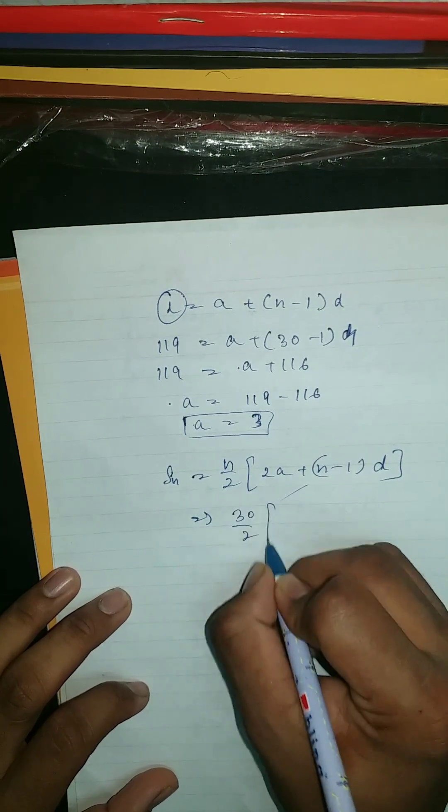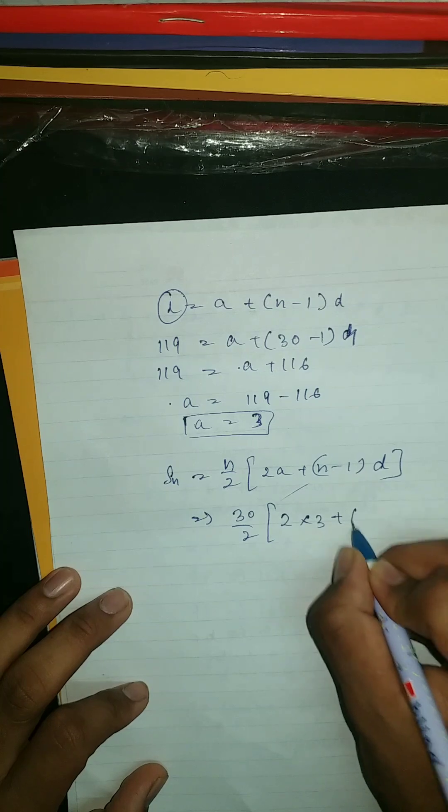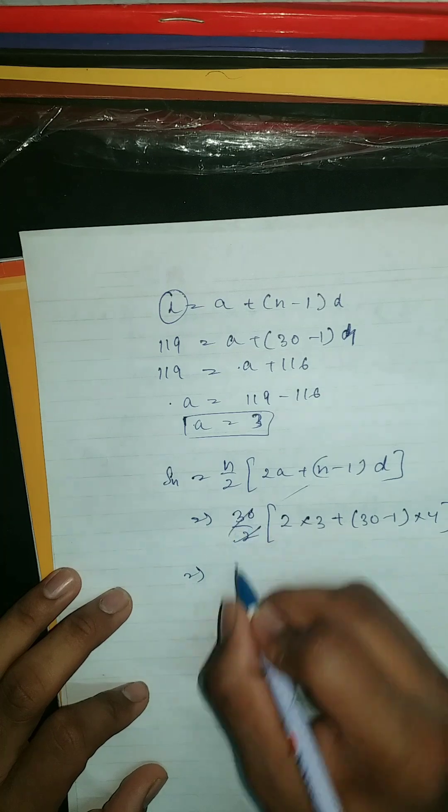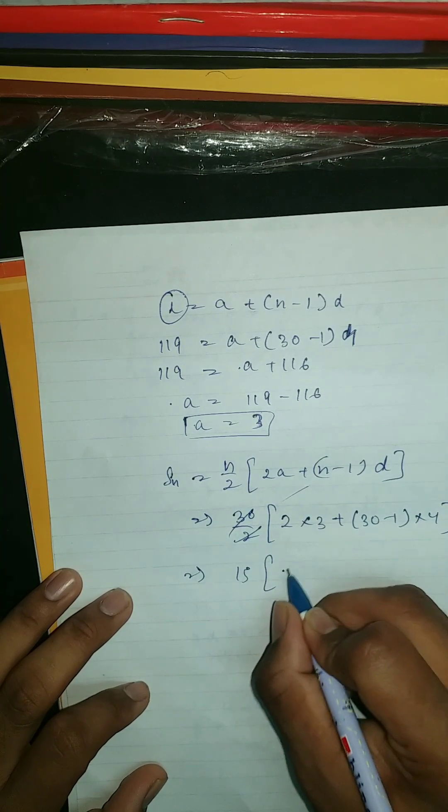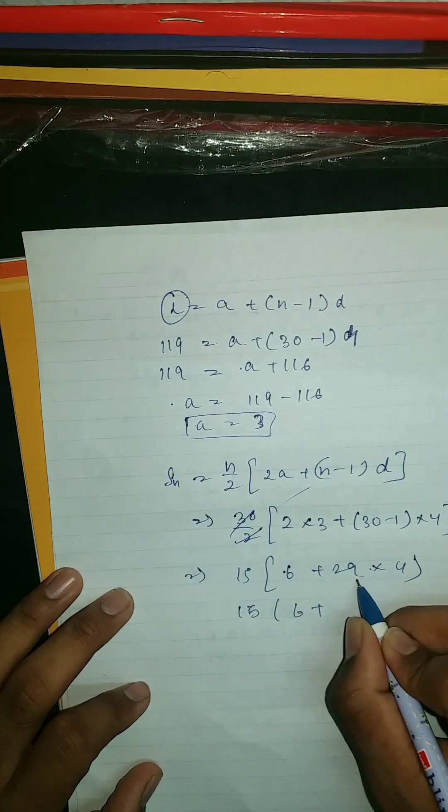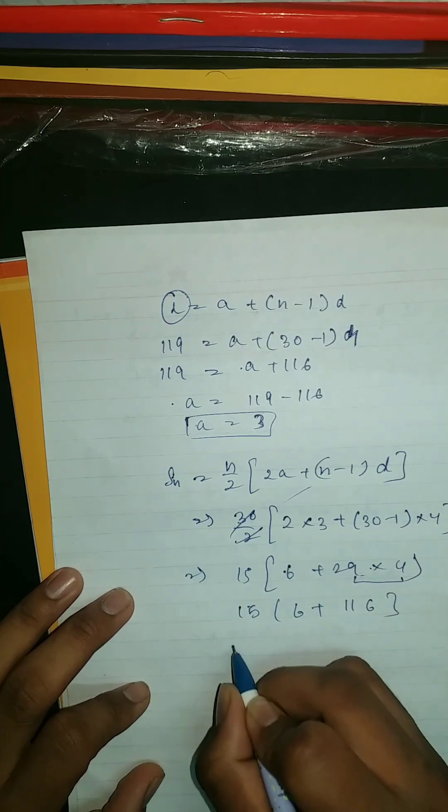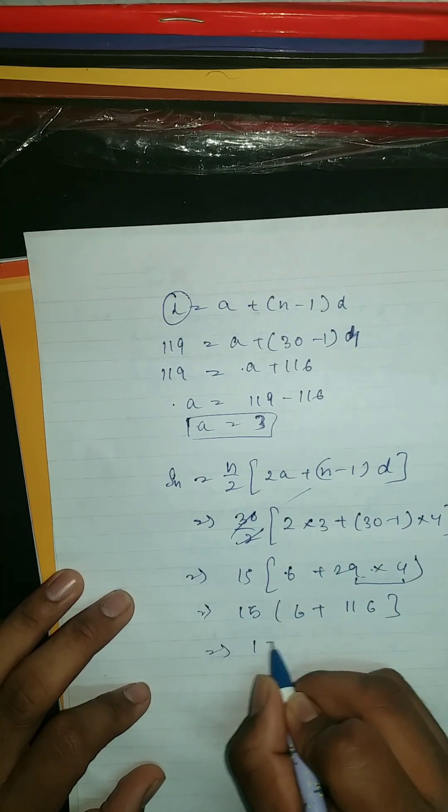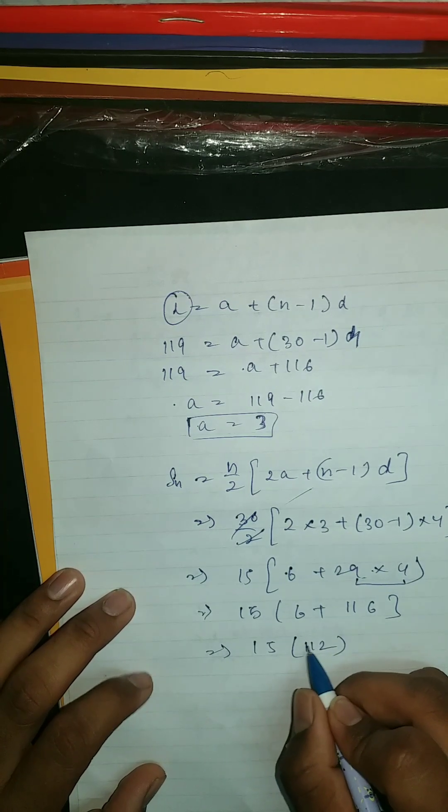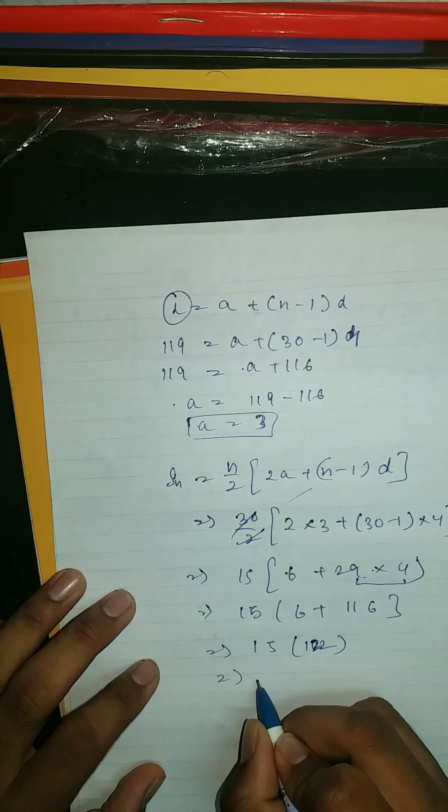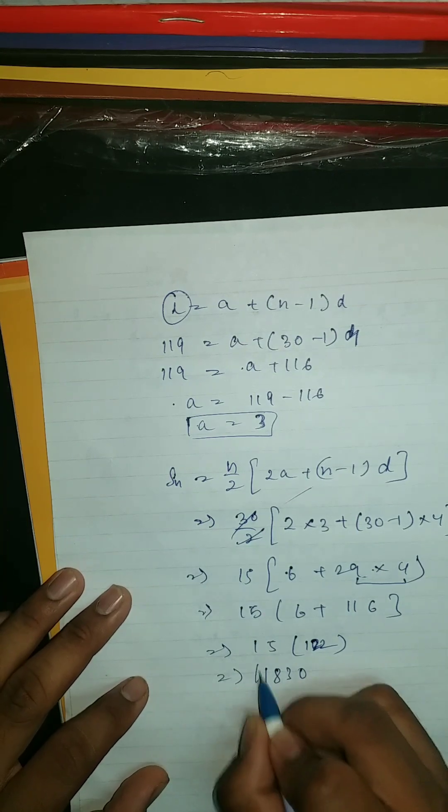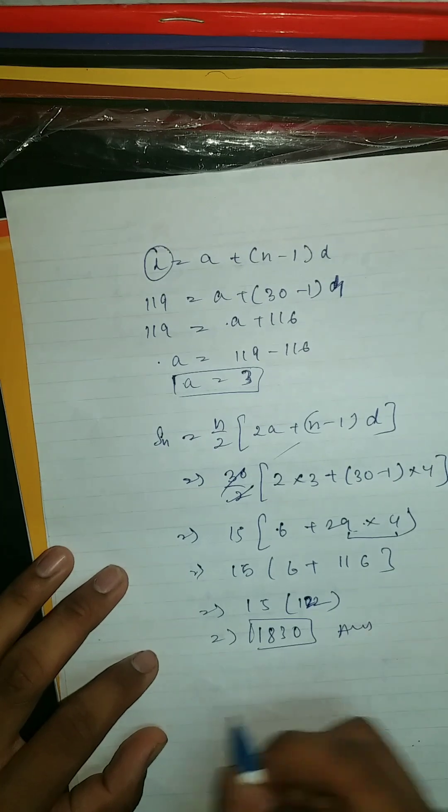Simply put the values: (30/2) times [2 times 3 plus (30-1) times 4], which is equal to 15 times [6 plus 29 times 4], equals 15 times [6 plus 116], which is equal to 15 times 122.